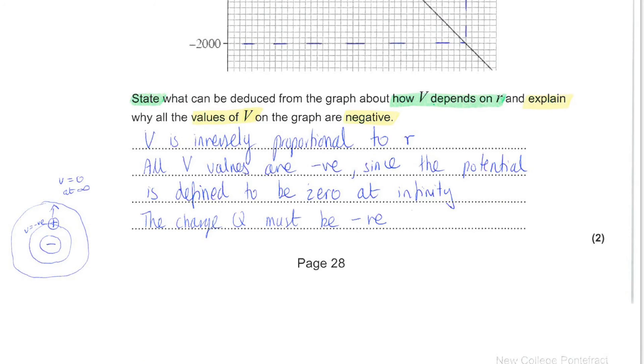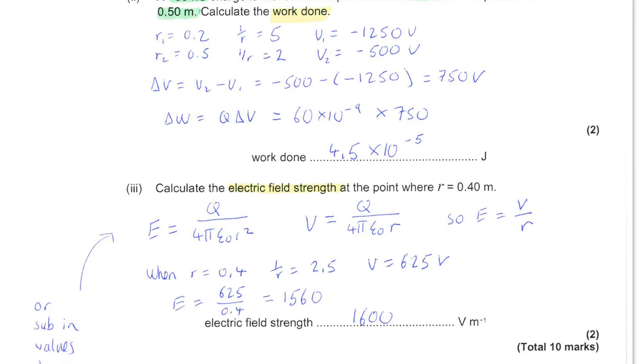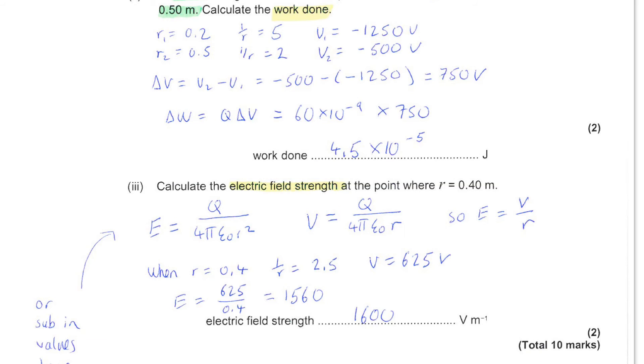So, we then just need the difference between those two values. So, the change in potential is the final, take away the initial potential. So, that's minus 500, take away minus 1,250, leading to a difference of 750 volts.